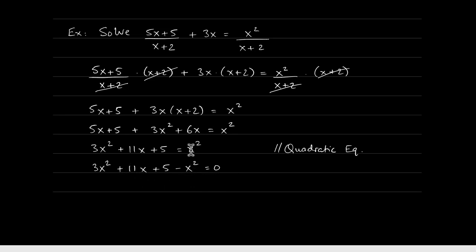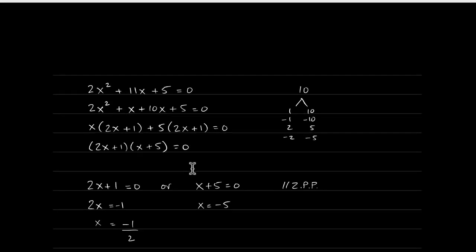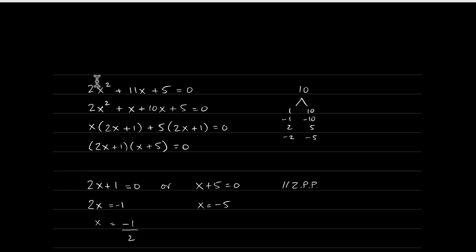Moving x squared to the left gives 3x squared minus x squared equals 2x squared, so we have 2x squared plus 11x plus 5 equals 0. There's no GCF, formulas don't apply since 2 is not a perfect square and a is not 1, so we use split the middle. 2 times 5 is 10; factors 1 and 10 add to 11. Factor by grouping gives 2x plus 1 times x plus 5 equals 0.